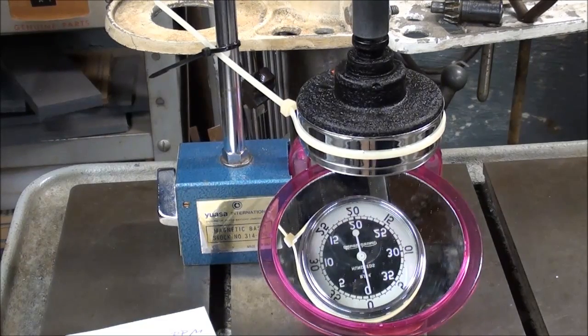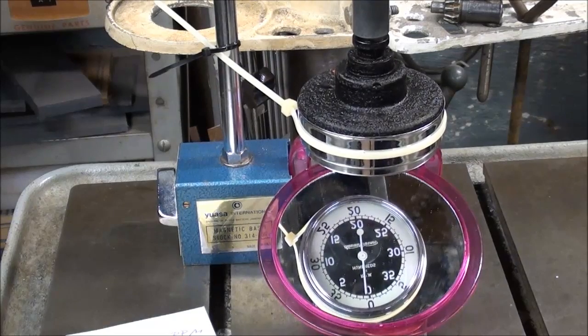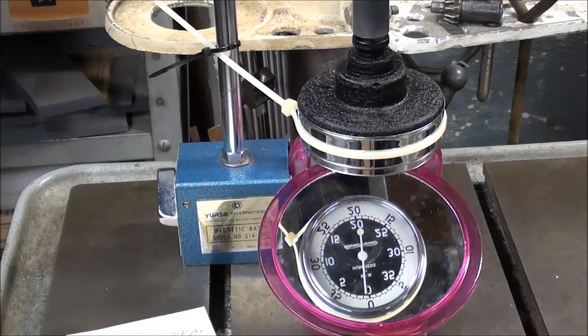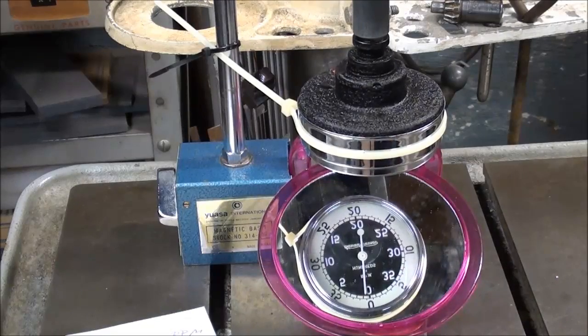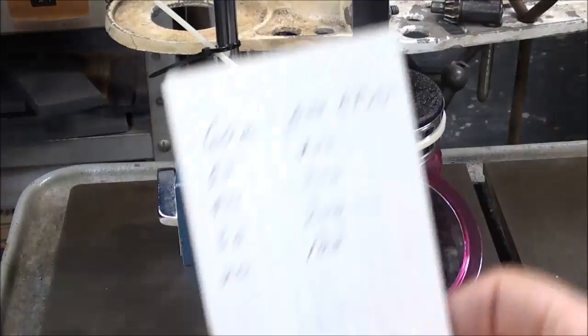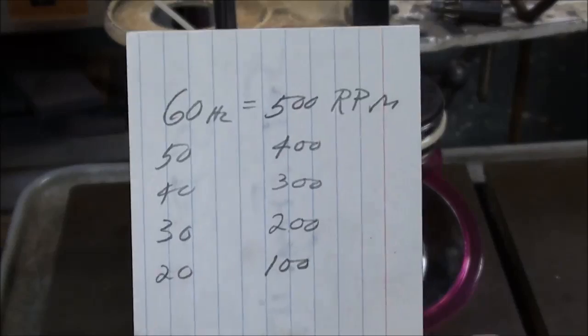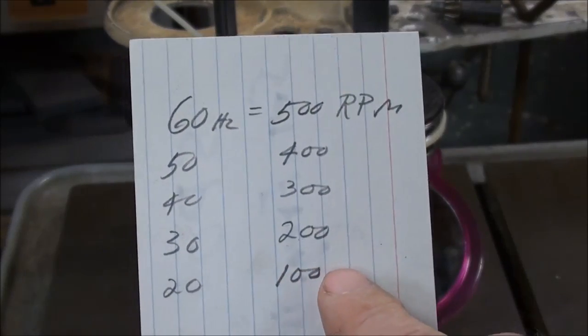So turning the machine on now at 20 hertz, I am getting approximately 100 RPM, if you look at the tachometer. So I'm making up a chart, so that 20 hertz equals 100 RPM.